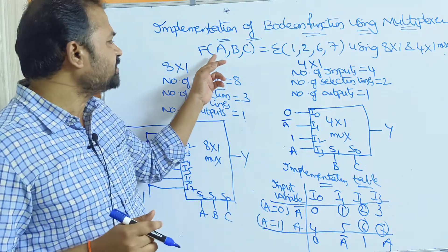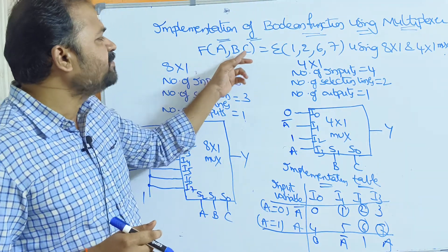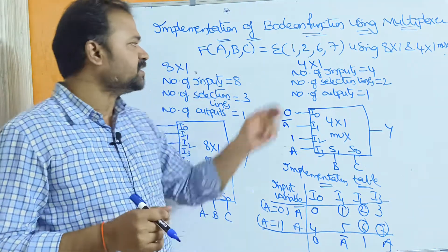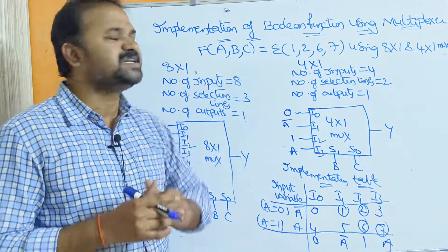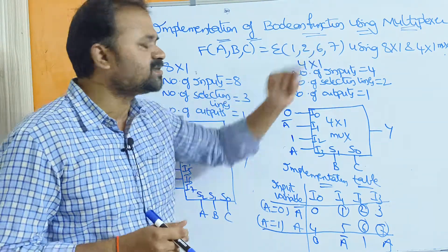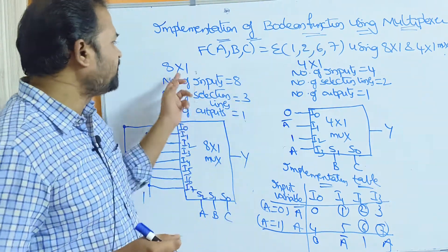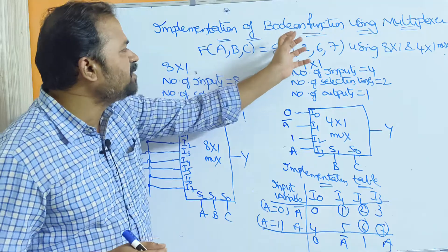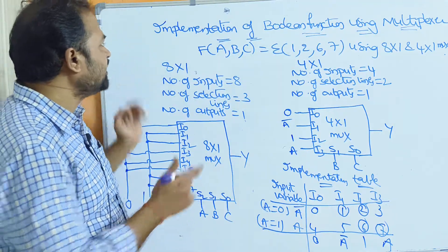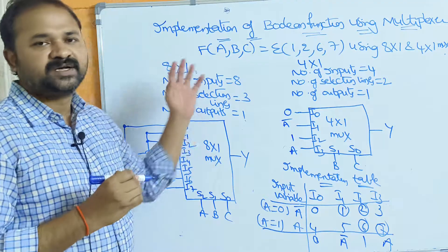Here the variables are a, b, and c. Sigma means minterms, so these are the minterms. First let us implement this boolean function with the help of an 8-by-1 multiplexer.